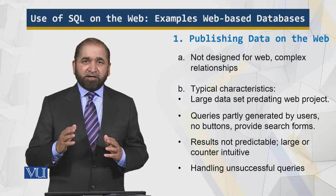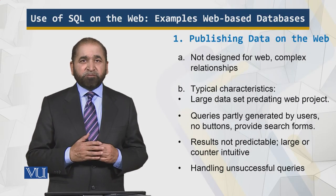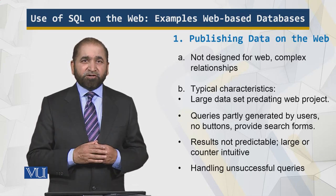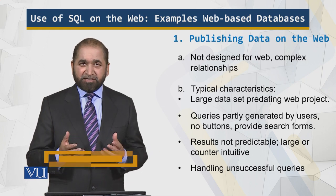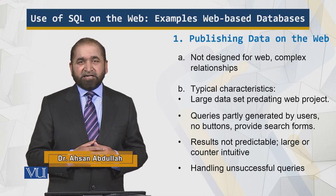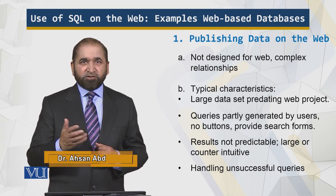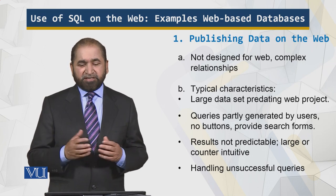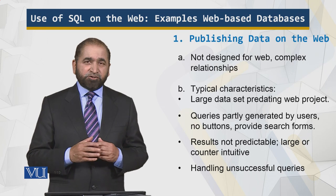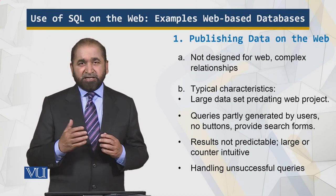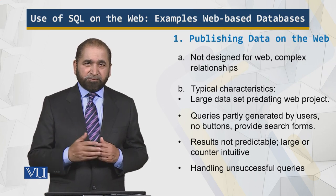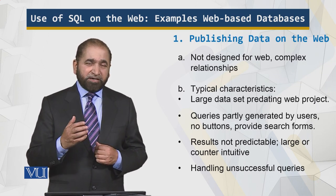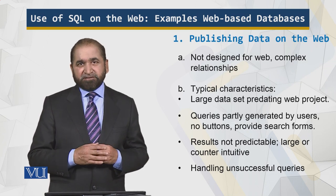Remember that the web is something new compared to databases, which have been around for a longer time. The data available there has not been collected, organized, or recorded in a way that makes it efficient for connecting to the net. What are the typical characteristics of the data? That data is of large size — lots of data. And the queries which are there, in some cases the end users of the prior era before the web may have had queries, but you might not be able to get those queries for your web application.